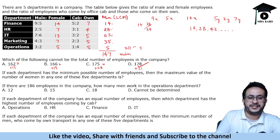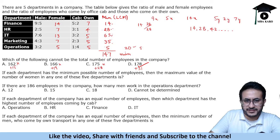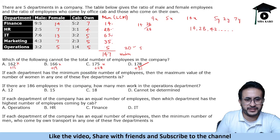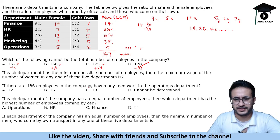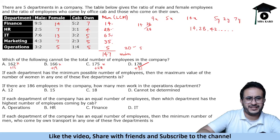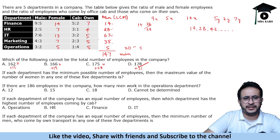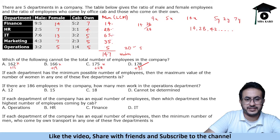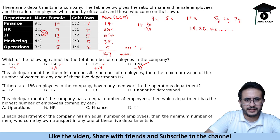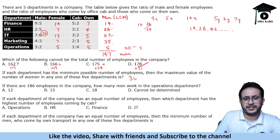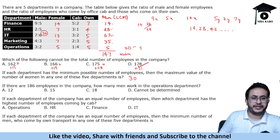Next question: if each department has the minimum possible number of employees, the maximum number of women in any department. We are inclined toward the IT department since the number of employees is high. With a 7:6 ratio, there will be 30 women employees in IT — other values are much lesser. Maximum number of women is 30 in the IT department.